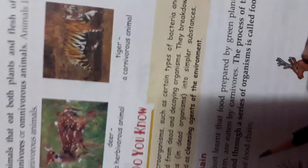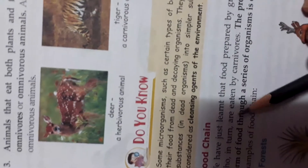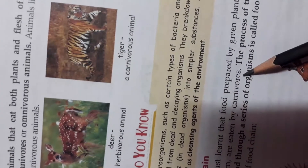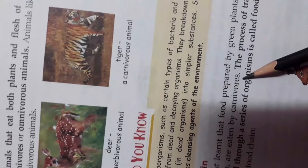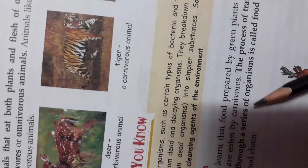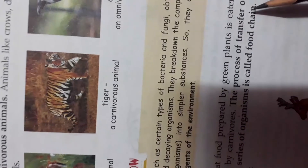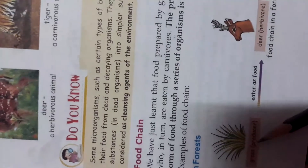Here is a food chain. We have just learned that food prepared by green plants is eaten by herbivorous animals, who in turn are eaten by carnivorous animals. The process of transfer of energy in the form of food through a series of organisms is called a food chain. Here is a picture to help you understand the food chain.